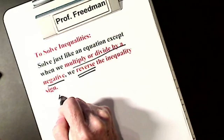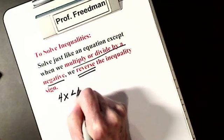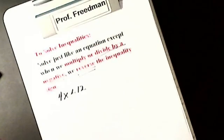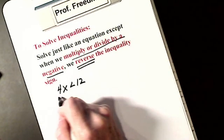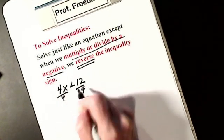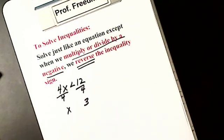So let's say I have 4x is less than 12. I'm going to solve just like an equation. Divide each side by 4. Here's my x, here's my 3. You ask yourself one question.